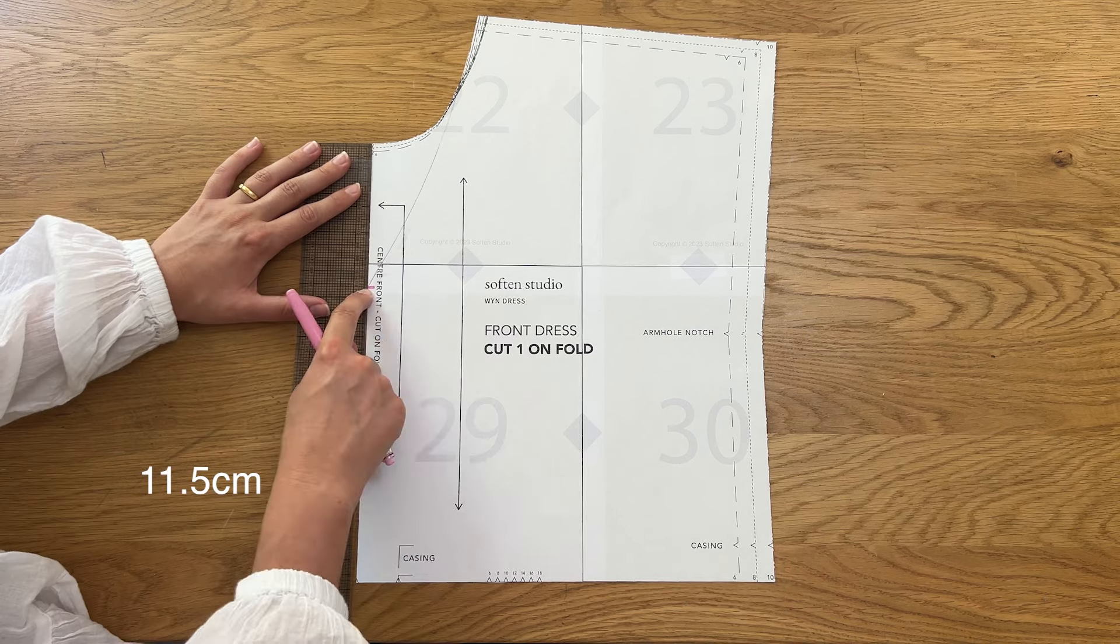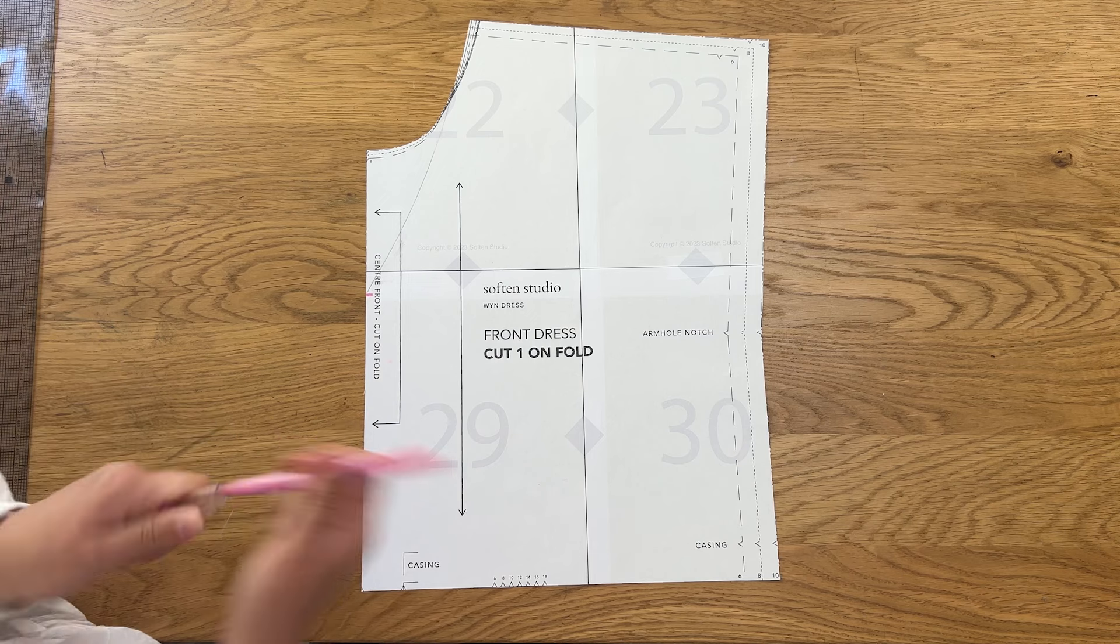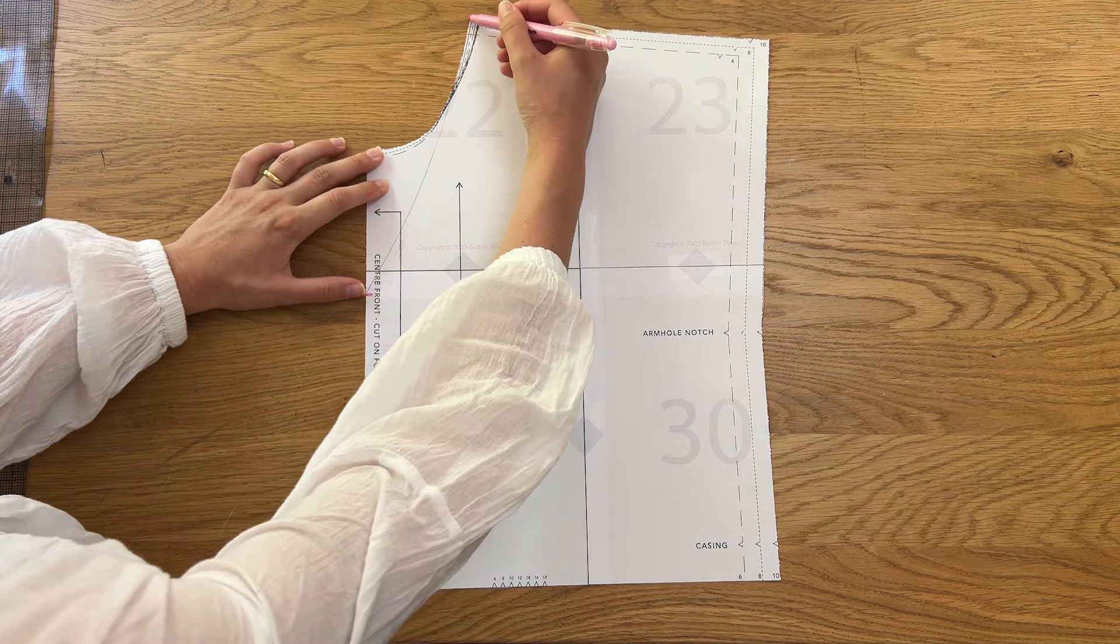Measure 11.5 centimeters down from the center front neckline and mark this measurement on your pattern. You could make the neckline lower or higher depending on your preference.